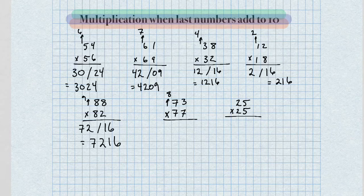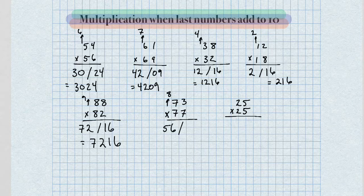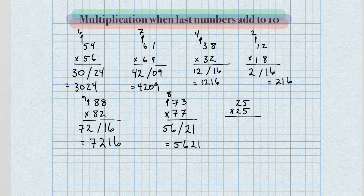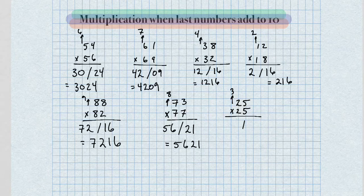Here, the next number up from 7 is 8. So for the left-hand side, we get 7 times 8, which equals 56. And the right-hand side, 3 times 7 equals 21. So our answer is 5,621. And the last problem in this set, the next number up is 3. For the left-hand side, we get 2 times 3, which equals 6. And 5 times 5 is 25, so our answer is 625.